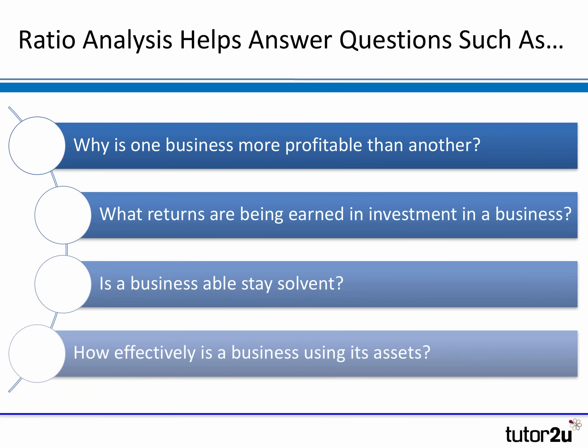Ratio analysis is very widely used in business because it helps answer some key questions. For example, why is one business more profitable than another? Or why is one business less profitable than another? What kind of returns are being earned by the shareholders from their investment in the business, or by a business as it invests in its projects? How solvent is a business — is it able to pay its debts when they become due?